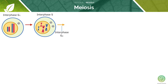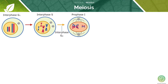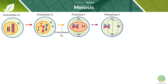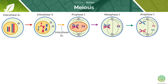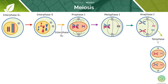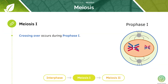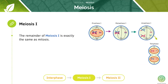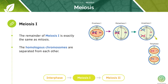We've now moved into prophase I, then metaphase I, anaphase, and telophase I. During meiosis I, a very important event known as crossing over will occur — this does not occur in mitosis. The remainder of meiosis I is exactly the same as mitosis: the homologous chromosomes are separated from each other and assorted into two diploid daughter cells.